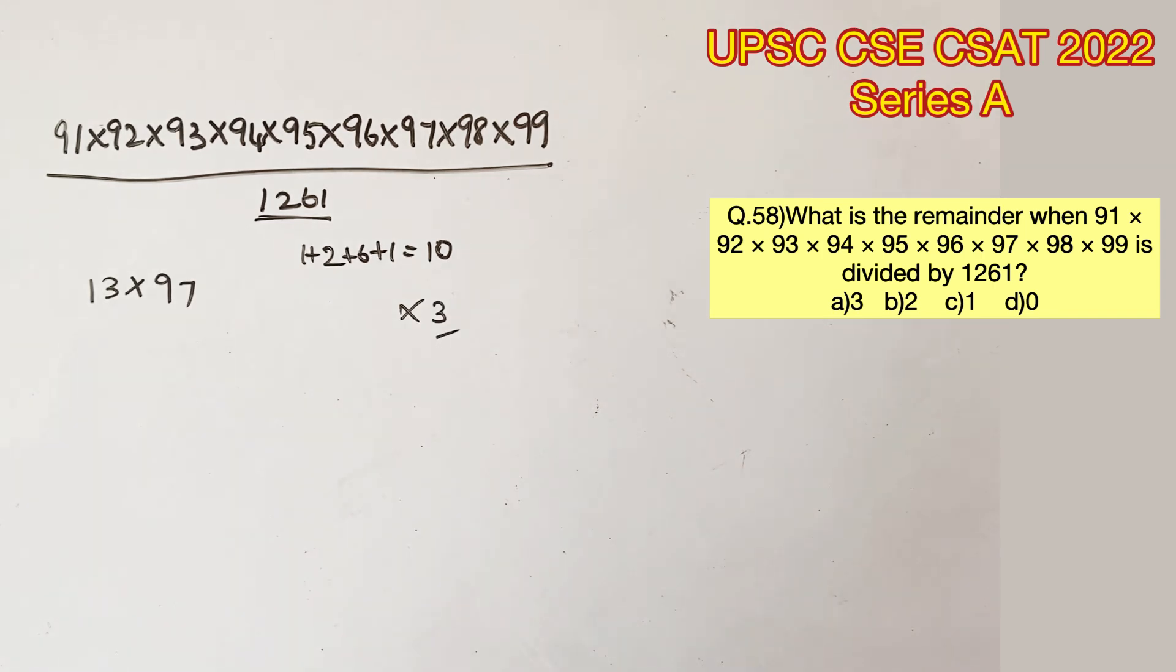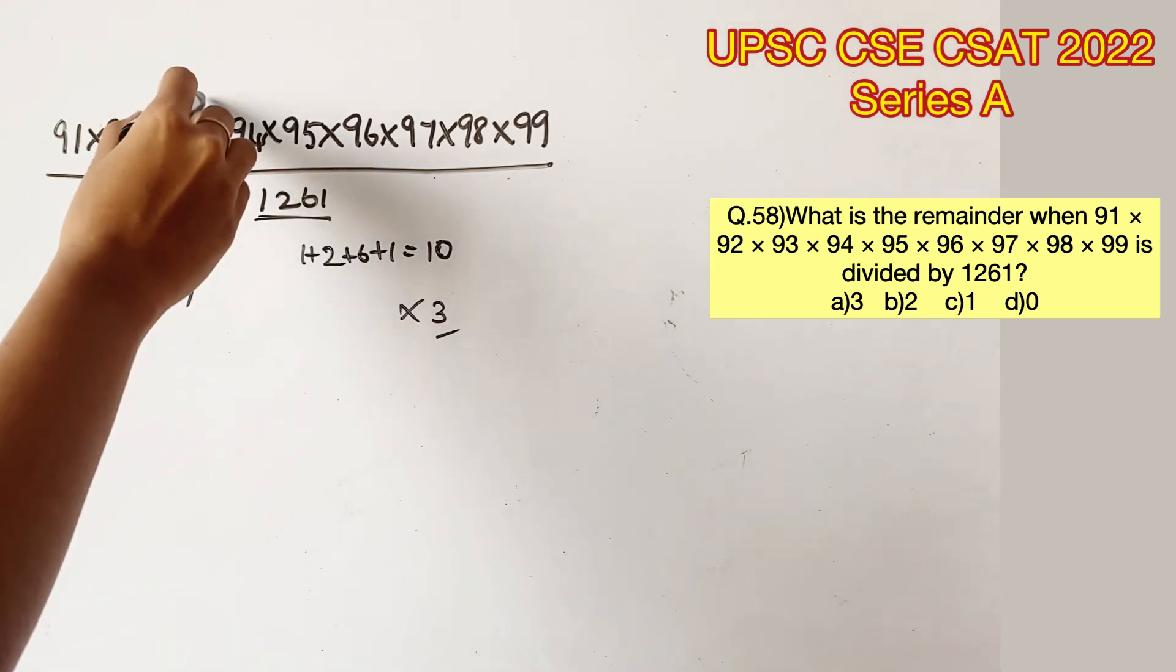When the sum of the digits is not divisible by 3, the number is also not divisible by 3. So with this we can eliminate all the numbers which are divisible by 3 on the top. So 93 won't be there.